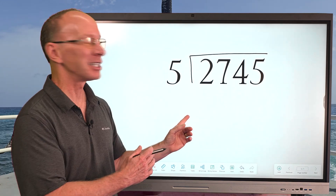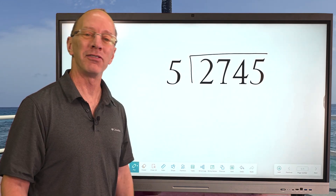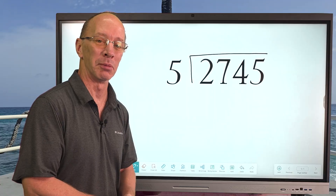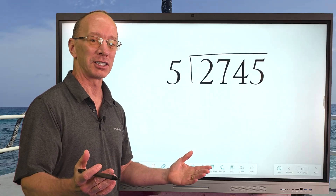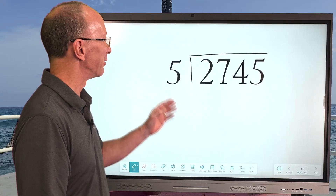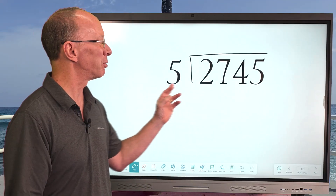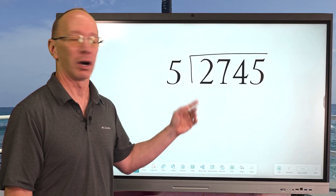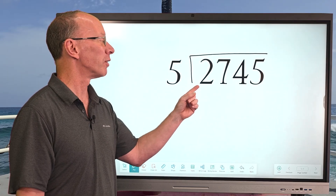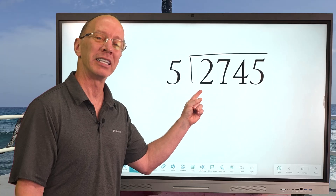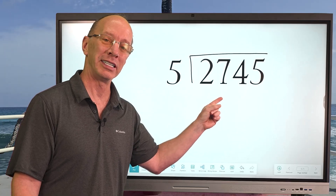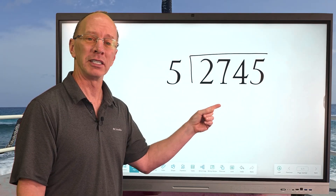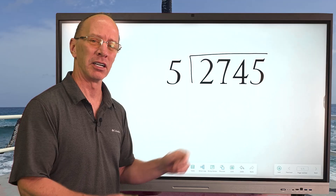Hey, welcome to the show. Check this out — we have a four-digit number divided by a one-digit number. Ready to get started? Let's do it! First of all, can I put five into two? Can't do it — two is too small. So we need to move over to the next number. We're going to be dealing with the number 27.